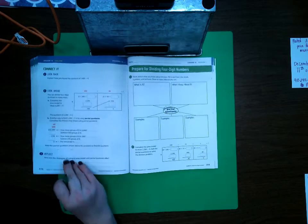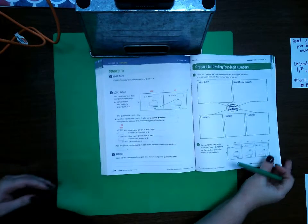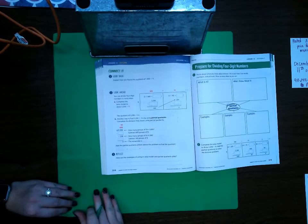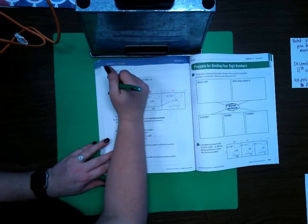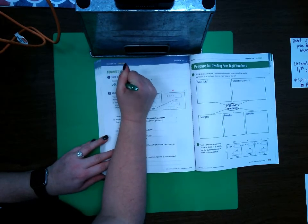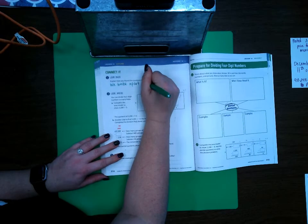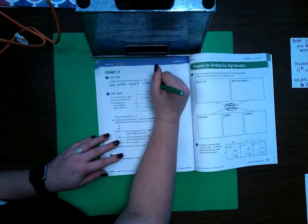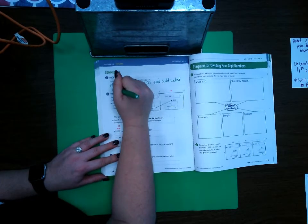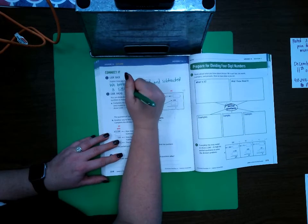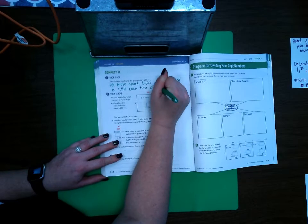Let's go ahead and go to page 314. On 314, it says, explain how you found the quotient of 1400 divided by four. So, we broke apart 1400 and subtracted a little each time using multiplication.